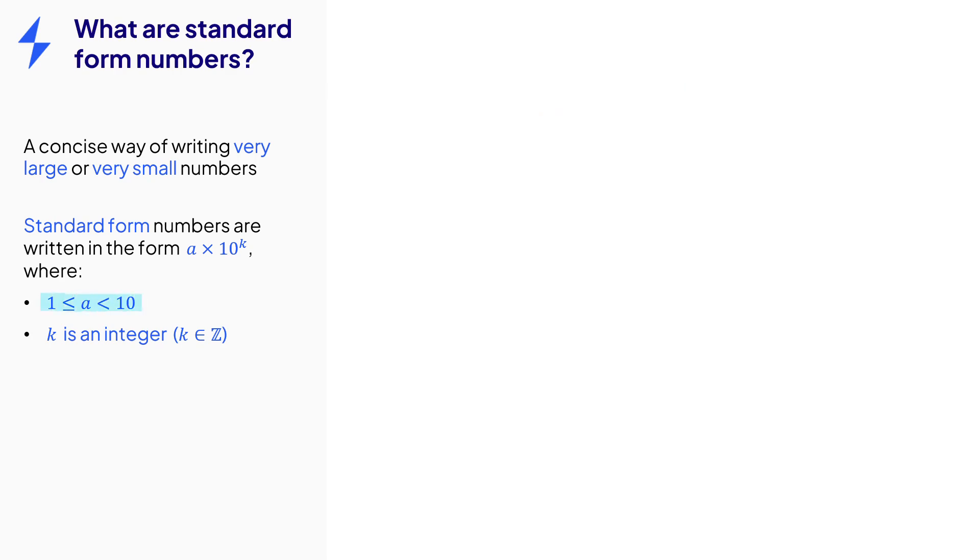Another important thing is this condition on the number a, or the number part of the standard form number. So take this number, 12.6 times 10 to the power of 9. That's a perfectly good number. But look at the 12.6. That is not between 1 and 10. That means that that number is not in standard form.